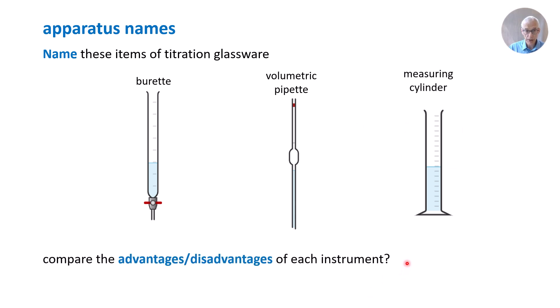Another topic for examination: compare the advantages and disadvantages of each instrument when measuring volumes. Compare a burette to a volumetric pipette. A burette measures any volume of solution, whereas a pipette measures one volume of solution, often 25 centimeters cubed.